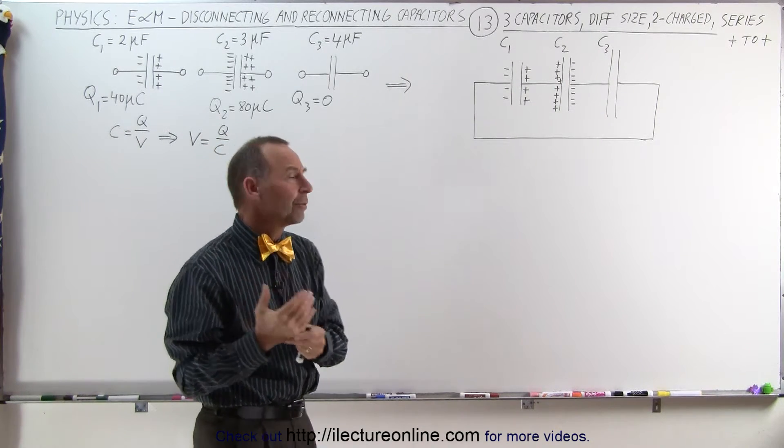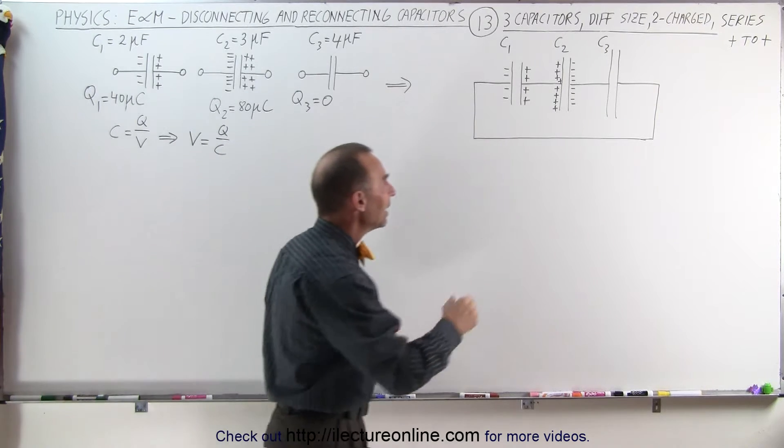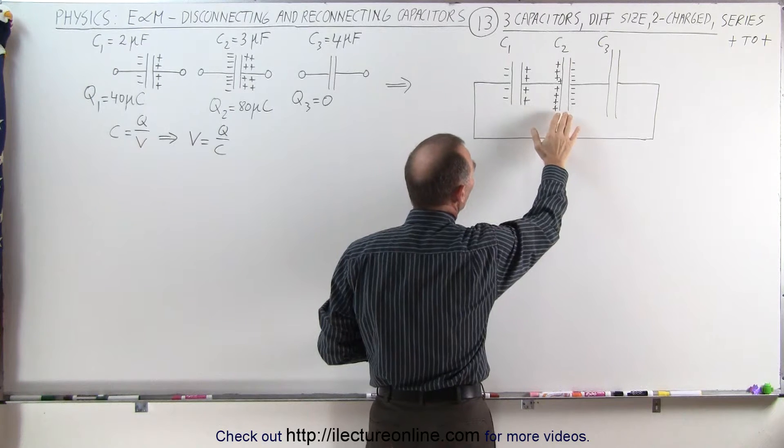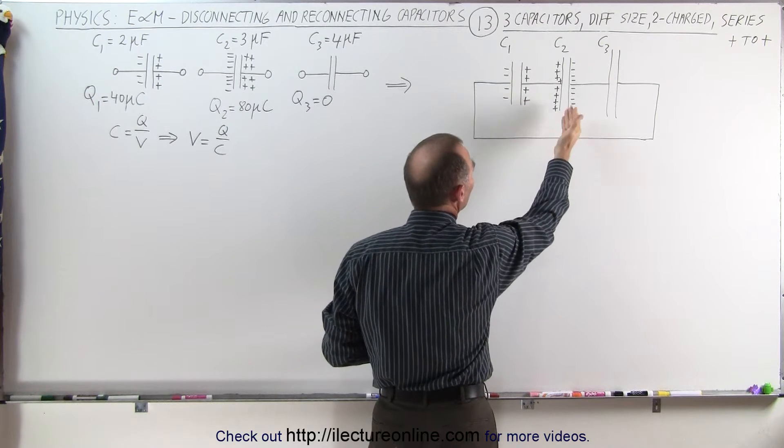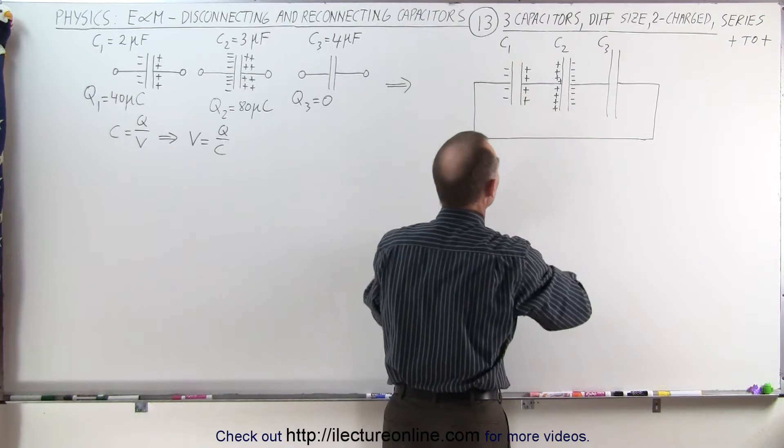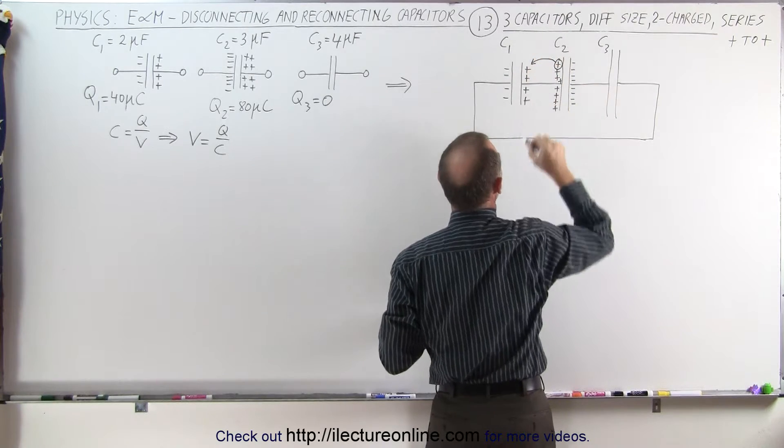The thing we want to try and figure out is which way do we think the charges are going to move. And even though this capacitor is larger than this capacitor, it has twice as much charge, and so we believe that some of the charge, some of the positive charge, is going to move over here. The assumption is that this charge will move over this direction.